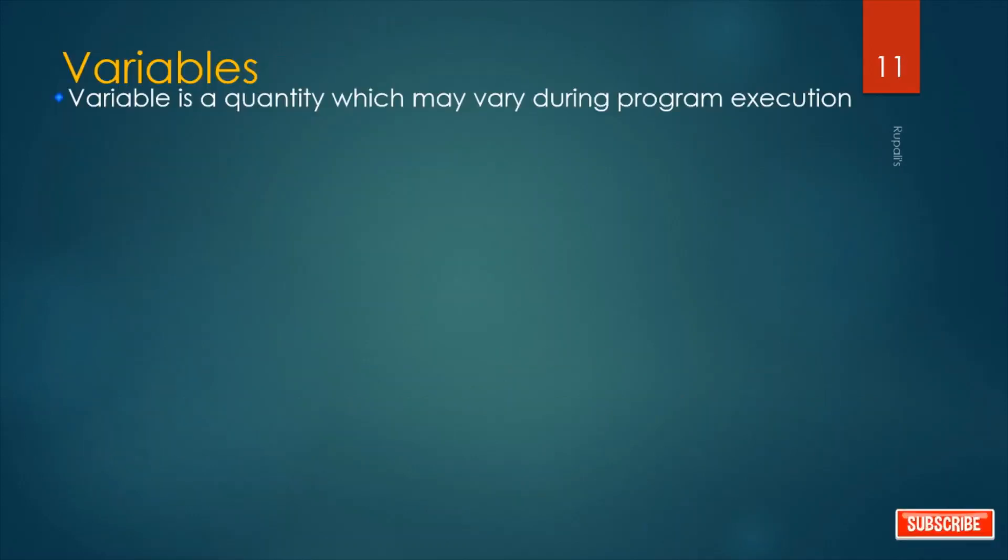Variable is a quantity which may vary during program execution. Variables are the names of memory locations where we store data. Say int a - here a is a variable. A is the name of the memory location where we want to store data.